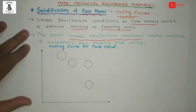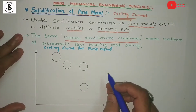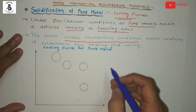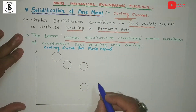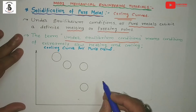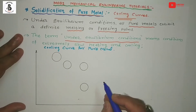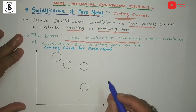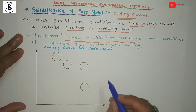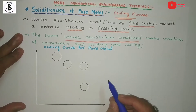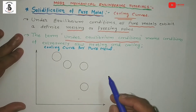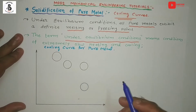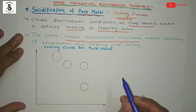A cooling curve for pure metal: a cooling curve means when a metal — here the case of pure metal or 100% single metal — is allowed to cool down from its molten state, that is the liquid phase, and solidifies gradually with respect to time. If all the temperatures are recorded over a regular interval of time, the curve shows such variations. That is the graphical representation of the different phases for the pure metal at different temperatures with respect to time — that temperature-time plot is called a cooling curve.